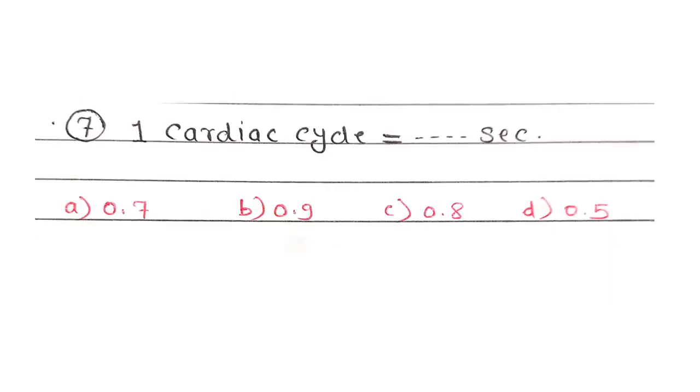Seventh question: One cardiac cycle is equal to dash dash second. Correct answer, Option C, 0.8 second. Aplei ek grudai chakra hee 0.8 second na chaste.